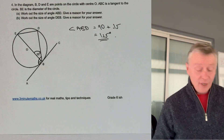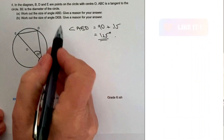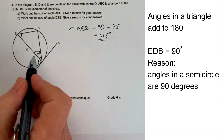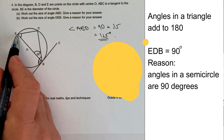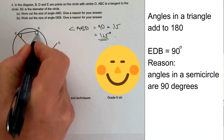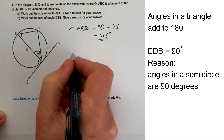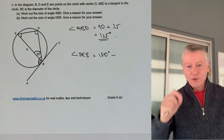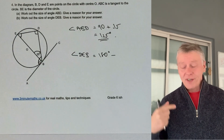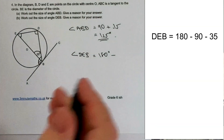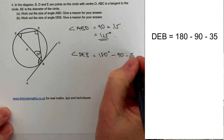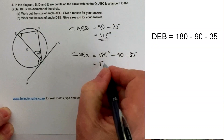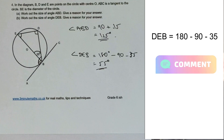For part B, we need to find angle DEB at the top of the triangle. With a triangle inside a circle where the base is the diameter, that angle at the top is 90 degrees. So it's straightforward: angle DEB equals 180 degrees — the total angles in a triangle — take away 90, take away 35. Therefore angle DEB is 55 degrees.